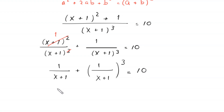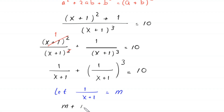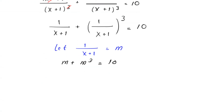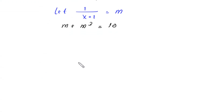We suppose that 1 over (x+1) is equal to m. So this equation will become m plus m cubed equal to 10. Rearranging and moving terms to the left-hand side, this will become m cubed plus m minus 10 is equal to 0.